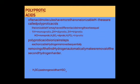Polyprotic acids are those that have more than one removable proton. Generally, acid molecules with more than one ionizable hydrogen are called polyprotic. If an acid has one removable hydrogen it is called monoprotic; if it has two it is diprotic; and if it has three removable hydrogen atoms it is called triprotic.